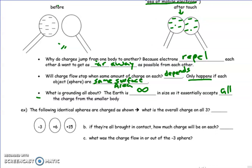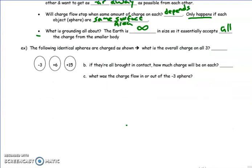Okay. So let's do a quick little example. I've got three identical spheres that are negative three units, positive six units, and positive fifteen units. And we're going to touch all three at the same time. But before we do so, let's ask, what's the overall charge in all three? Well, we simply add them up. Take into account positive and negatives, so we would end up with positive eighteen.